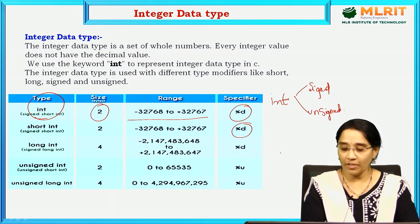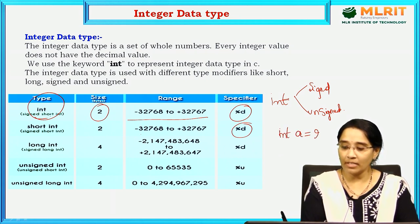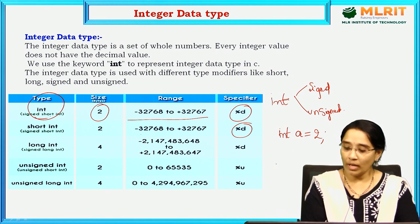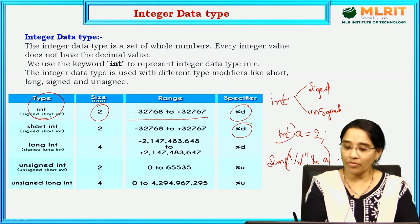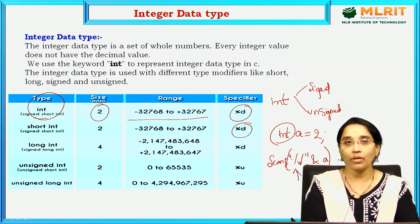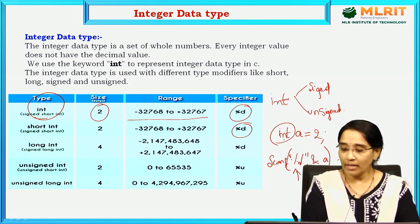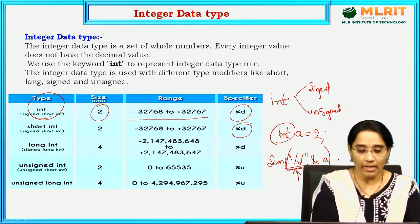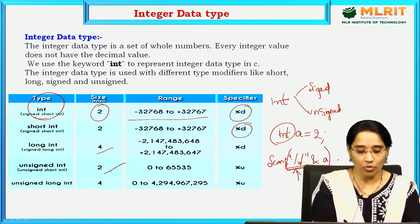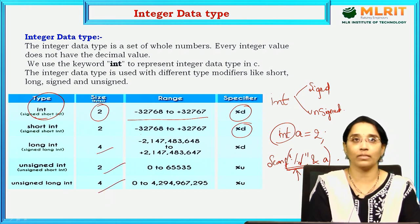If you declare a variable of type integer, for example int a = 2, in the scanf function you should mention the format specifier %d to indicate which type the data is. Short int is 2 bytes with range minus 32768 to 32767. Long int is 4 bytes, unsigned int is 2 bytes, and unsigned long int is 4 bytes.